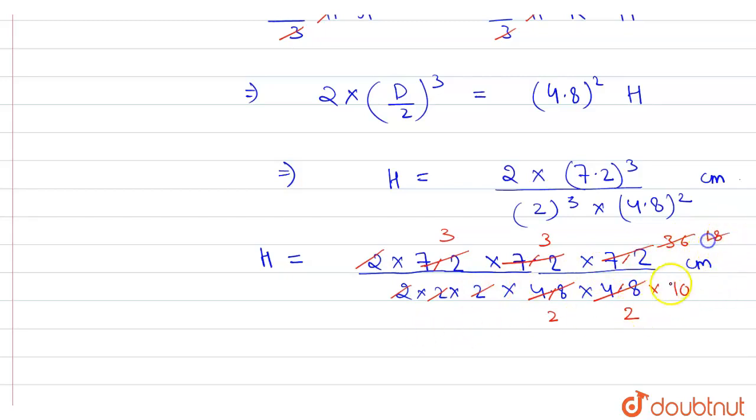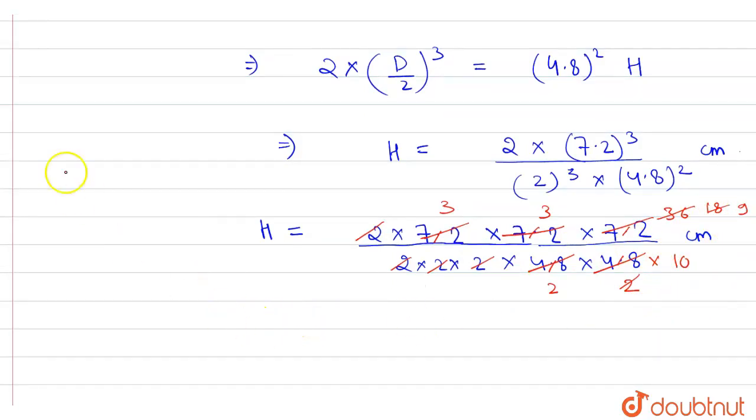So this will give h equal to 3 × 3 × 9 upon 2 × 10 centimeter.